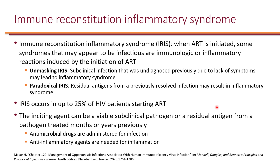For someone with a CD4 cell count less than 200, the immune system is essentially non-existent. When an HIV patient starts ART and the depleted CD4 count begins to rise, this can result in a syndrome referred to as IRIS — Immune Reconstitution Inflammatory Syndrome. This means that if you start ART and the CD4 cell count goes up, you start to have symptoms of inflammation.